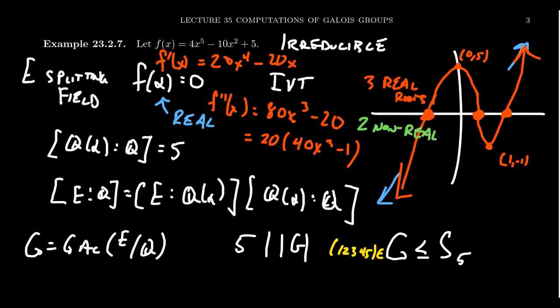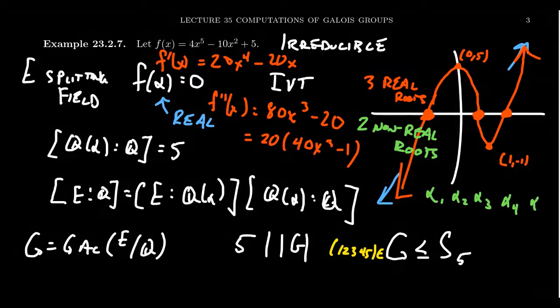Since it has three real roots, that tells us we have two non-real roots. Those non-real roots have to be complex conjugates of each other. If you take your roots alpha one through alpha five, the non-real roots, say alpha four and alpha five, have to be conjugates of each other. So alpha five equals alpha four conjugate.